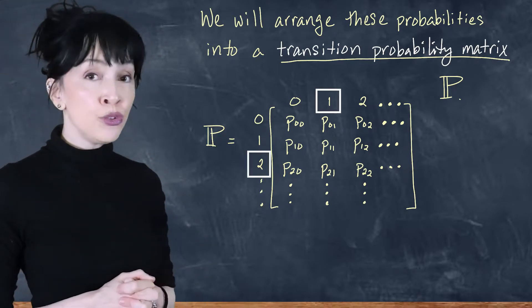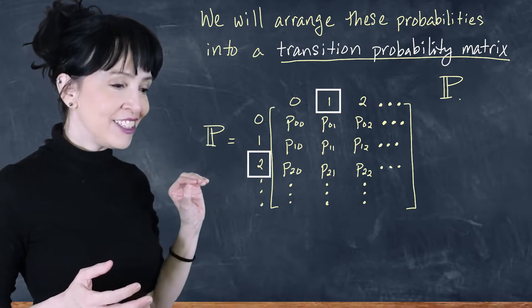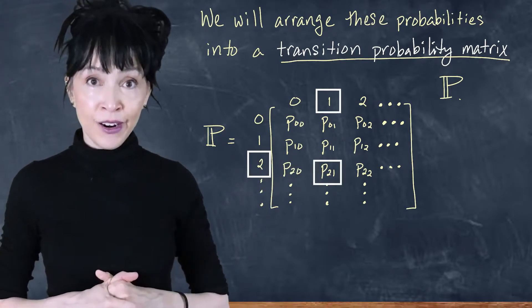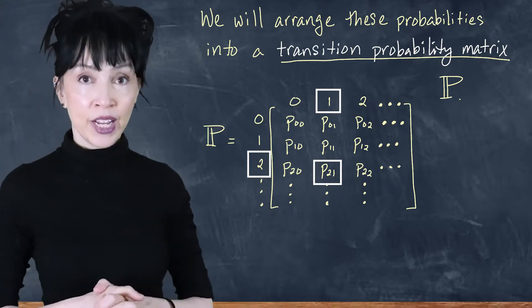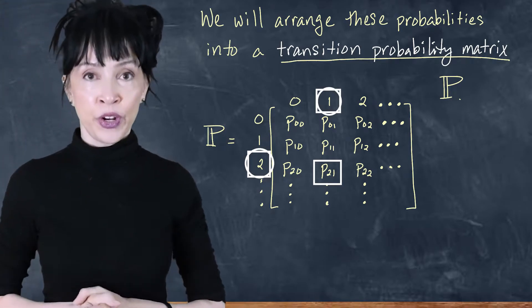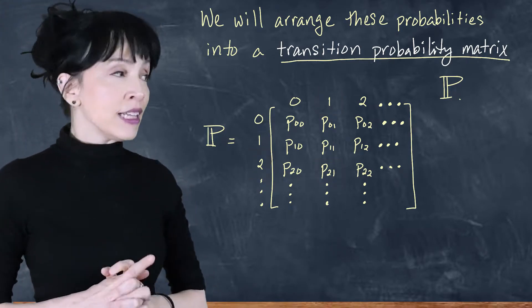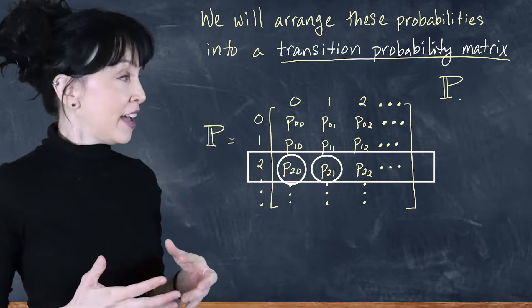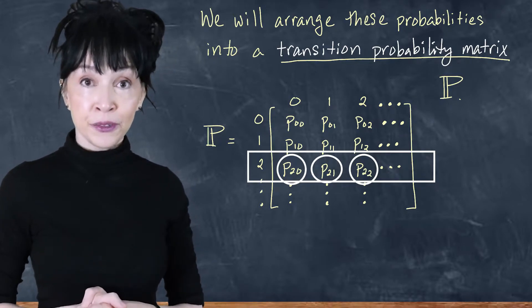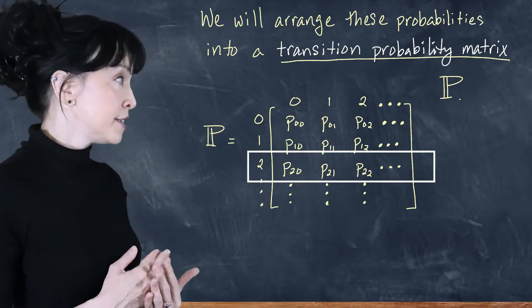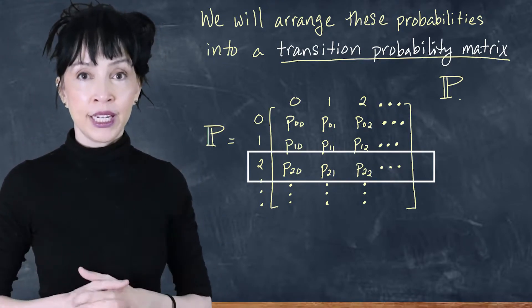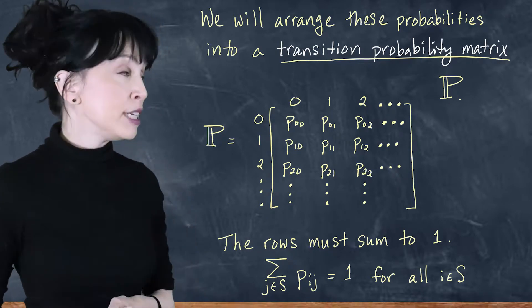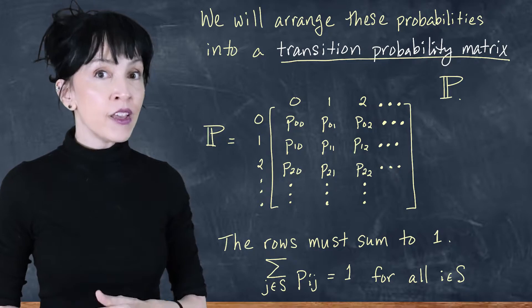For example, if I look at the 2-to-1 entry of the matrix — meaning the row labeled 2 and the column labeled 1 — I put p_{21} in there, which stores the probability that you move from 2 to 1. Here is where you are and here is where you're going. Looking at the second row more closely: the probability of moving from 2 to 0, from 2 to 1, from 2 to 2, and so on. You have to go somewhere, so if you sum all values in a row they total 1. More abstractly, the sum of p_ij over all j in the state space equals 1 for every i in the state space.